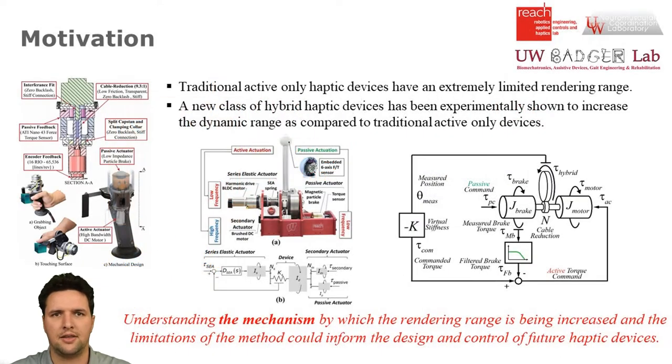Traditional active-only haptic devices have a limited rendering range. A new class of hybrid devices, composed of active and passive actuators arranged in parallel, has been experimentally shown to increase the maximum virtual stiffness a haptic device can achieve. Understanding the mechanism and limitations by which the rendering range is increased could inform the design and control of future devices.